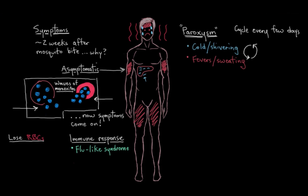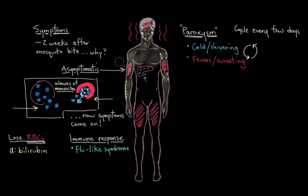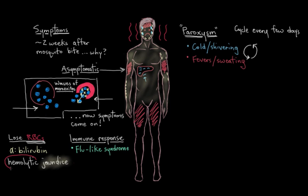Red blood cells contain proteins called bilirubin. When they leak out into our bloodstream after the red cells are destroyed, they tend to deposit under our skin and give our skin a yellowish tinge. This is known as hemolytic jaundice — jaundice referring to the yellowing of the skin, and hemolytic meaning the bursting of red blood cells, which is why it's happening.